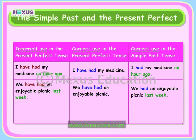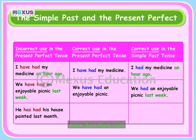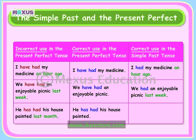The third example: 'He has had his house painted last month' shows an incorrect use of tense, because 'has had' refers to the present perfect tense whereas 'last month' refers to a time in the past. The correct present perfect form is: 'He has had his house painted.' Or it can be written in the simple past tense as: 'He had his house painted last month.'